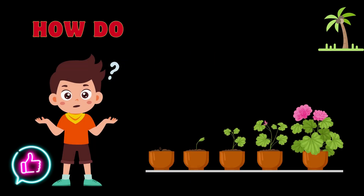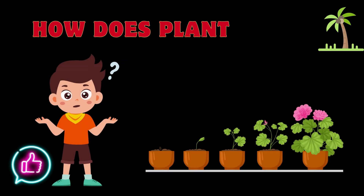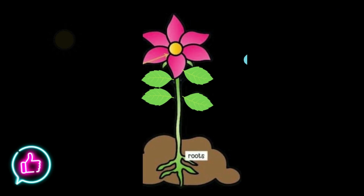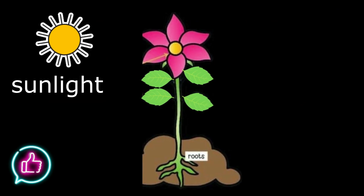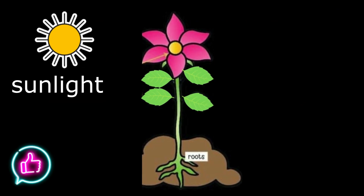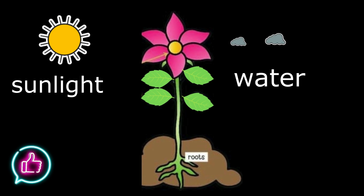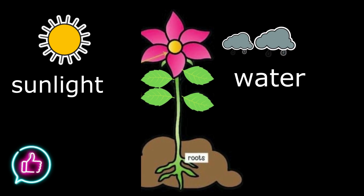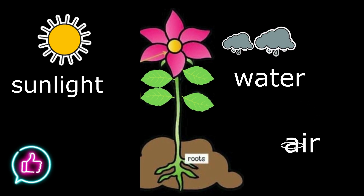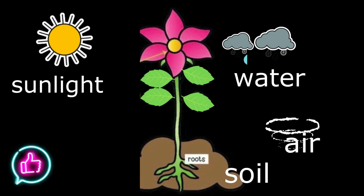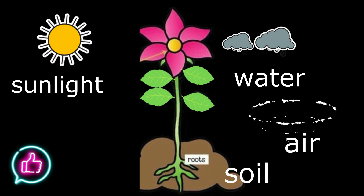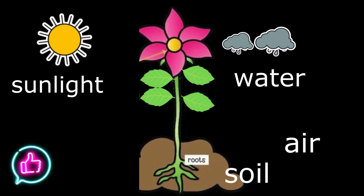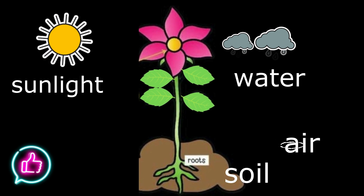How does a plant grow? They need sunlight, water, air, and soil.